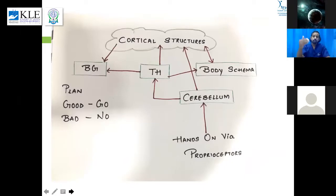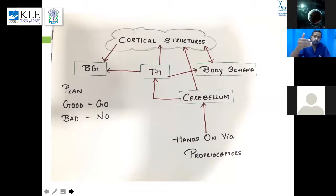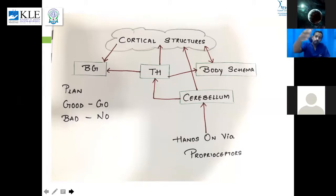You do hands-on via proprioceptors using all these sensory receptors. The impulse goes to the cerebellum, then to the thalamus — the gatekeeper — which allows the impulse to go to cortical structures and the body schema. Body schema is like pixels in a camera; every impulse resolves the pixels so the picture gets clearer. That's why repetitions play a big role in neuro rehab. From cortical structures, the descending impulse goes to the basal ganglia, which assesses the plan — if good, it gives a go-ahead; if not, it says no.